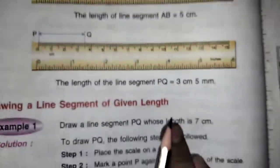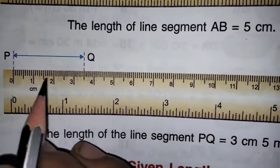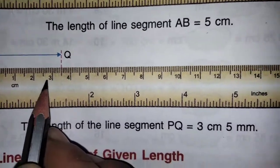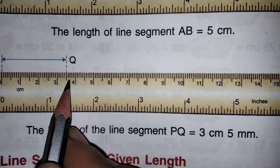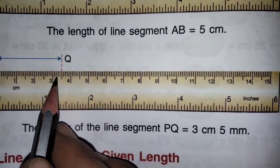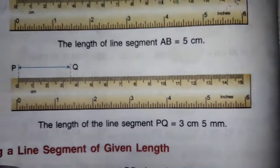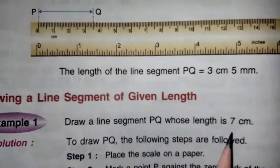Now next one they gave one more. You have to see how much it is line segment, 1, 2, 3, 3 cm. After 3, you have to count the lines, 1, 2, 3, 4, 5, 3.5 cm. Otherwise, 3 cm 5 mm.